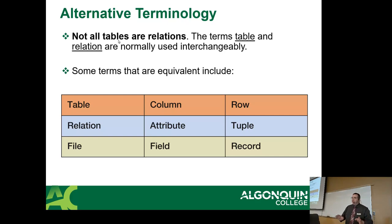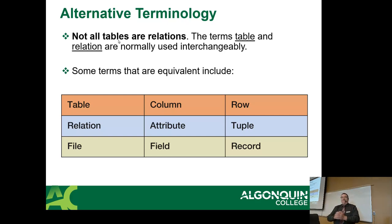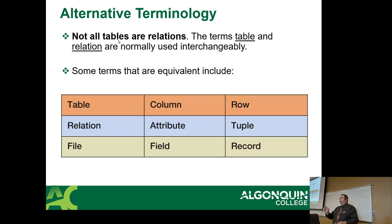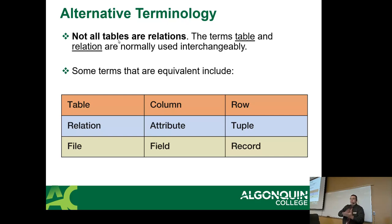In the database world they reuse the word 'relation.' There's a word called 'relation' and a word called 'relationship' and they actually mean two different things. Not all tables are relations in the strict sense; however, 99% of the time the terms 'table' and 'relation' are used interchangeably. Older versions of IBM's DB2 used to only use the word 'relation' instead of 'table,' and eventually they made both acceptable.